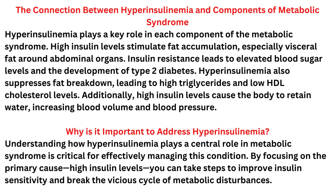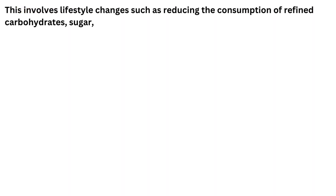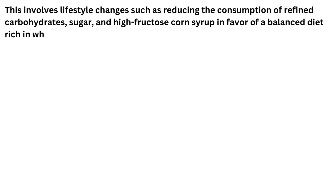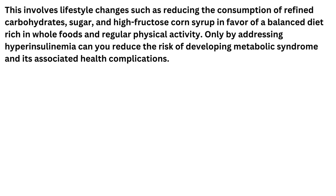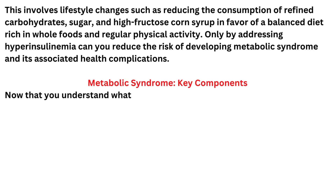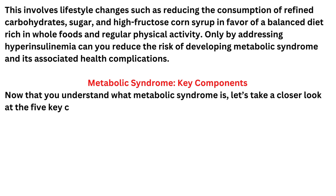Understanding how hyperinsulinemia plays a central role in metabolic syndrome is critical for effectively managing this condition. By focusing on the primary cause — high insulin levels — you can take steps to improve insulin sensitivity and break the vicious cycle of metabolic disturbances. This involves lifestyle changes such as reducing the consumption of refined carbohydrates, sugar, and high fructose corn syrup in favor of a balanced diet rich in whole foods and regular physical activity. Only by addressing hyperinsulinemia can you reduce the risk of developing metabolic syndrome and its associated health complications.